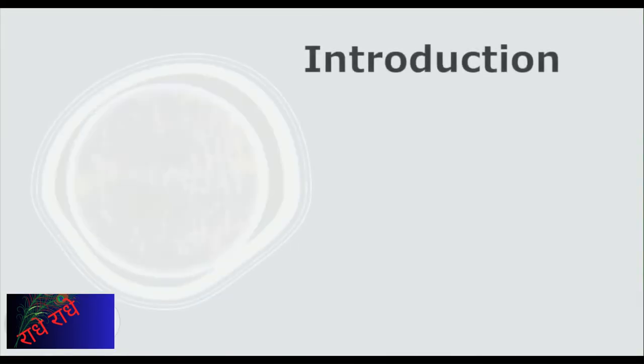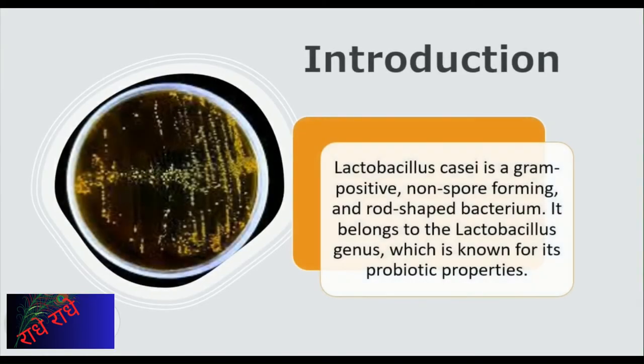Lactobacillus casei is a gram-positive, non-spore-forming, and rod-shaped bacterium. It is naturally found in human and animal habitats and is known for its probiotic properties. L. casei has a white, light-sensitive appearance and is most commonly found in fermented foods such as yogurt, kefir, and kombucha. Its probiotic characteristics are believed to help improve digestion and overall gut health.